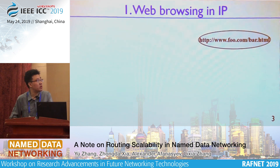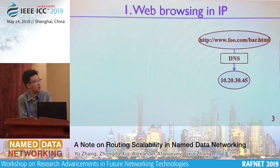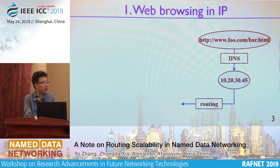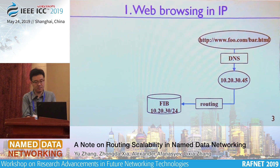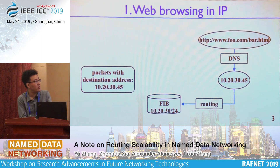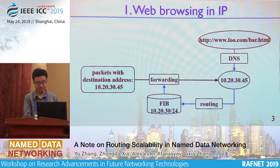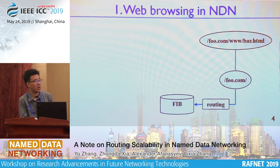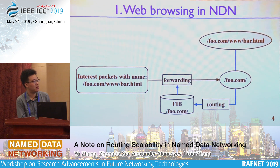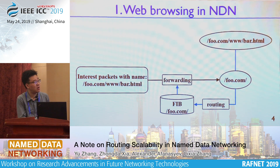When we do web browsing in IP, the client has a URL and DNS translates the domain name to an IP address. The routing feeds the forwarding table with IP prefixes, and then we can send packets to the destination through forwarding. In NDN, we directly use the data name for routing and forwarding, so we don't need DNS. The routing directly feeds the forwarding table with the data name prefix, and then we do similar forwarding using that table. So we can see there is not much difference in the concept of forwarding and routing.